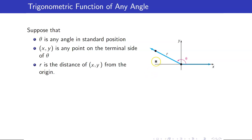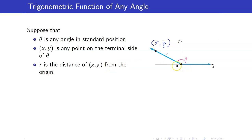We are now ready to discuss trigonometric functions of any angles. Suppose that theta is any angle in standard position — an angle whose initial side lies on the positive x-axis. Let (x, y) be any point on the terminal side of theta. R is the distance of (x, y) from the origin. Using the distance formula, R equals the square root of x squared plus y squared.